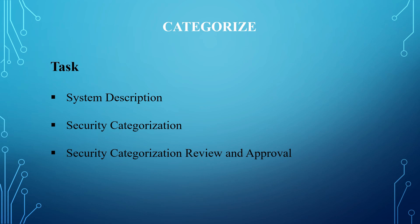The next task is the security categorization. Under this task, the system is categorized and the security categorization result is documented. The next task is the security categorization review and approval. Under this task, the security categorization results and decisions are reviewed and approved.